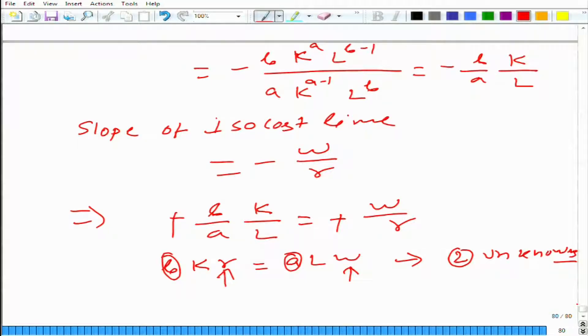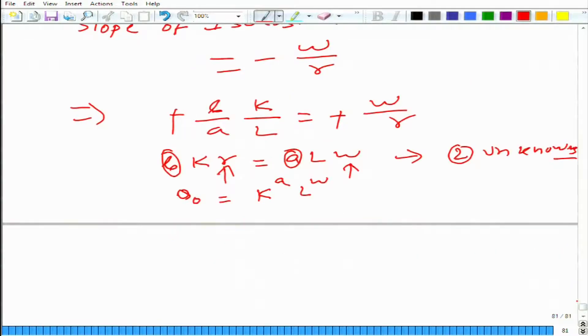Second equation, how do we get it? The second equation is from here, q naught is given and we have k to the power a times l to the power b. What we can do from here is figure out l in terms of k and q naught. We get l equals q naught over k to the power a, to the power 1 over b.